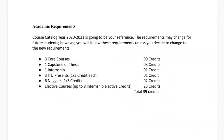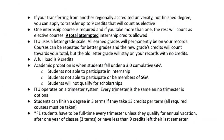For academic requirements, the 2020–2021 course catalog will be your reference. Requirements may change for future students, but you will follow these requirements unless you decide to change to new ones. If transferring from another regionally accredited university, you can apply to transfer up to nine credits as selective courses. One internship course is required; additional internships count as selective courses. Nine total internship credits are allowed. ITU uses a letter grade scale — all earned grades permanently remain on your record.